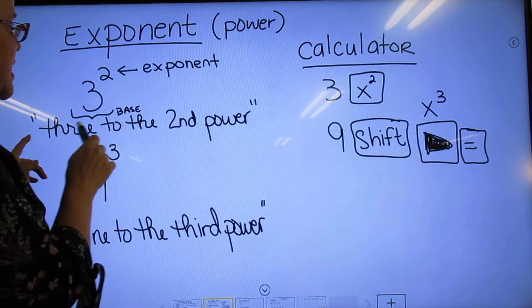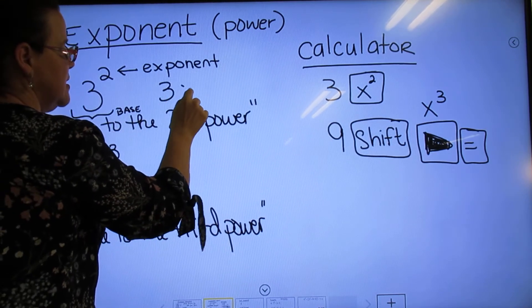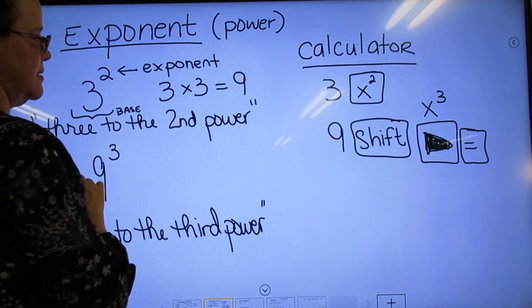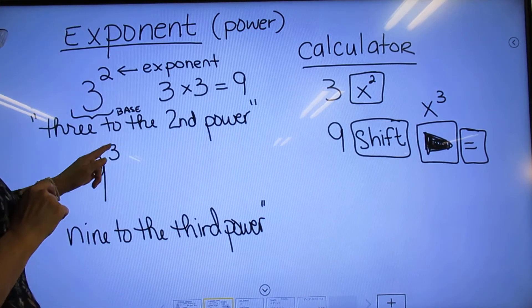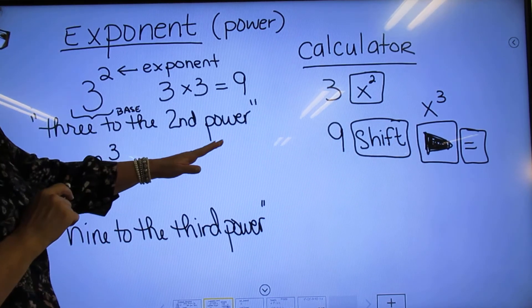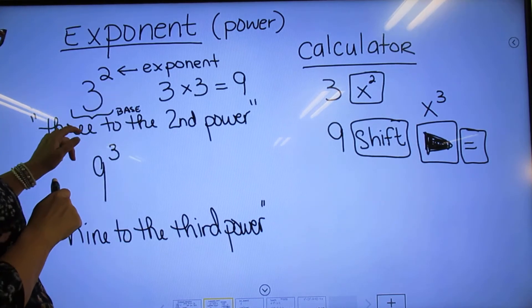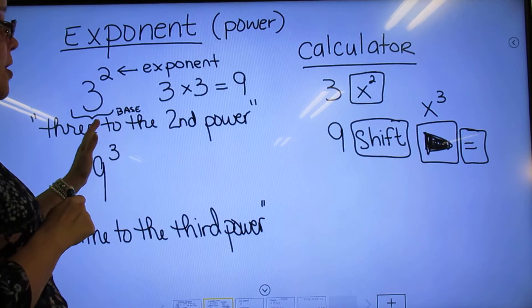So it would be 3×3, which would be 9. And I also put how you say it: you don't say 3 to the 2. Don't do that. It's 3 to the second power or 3 squared.